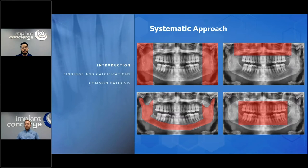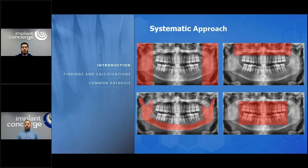I constantly go over this systematic approach — it is the best method. The more times you go through a volume in a specific way that you're comfortable with, the more efficient and faster you will be. Always keep everything the same: look at the condyles first, then the airway, then the sinuses, then the bony structures around the orbit and nasal cavity, and always look at the dentition last. Your area of interest should be the last thing you look at, because otherwise you'll get tunnel vision and forget about everything else.